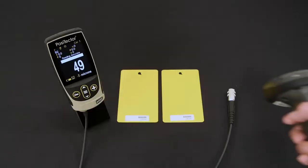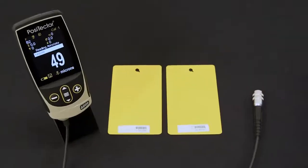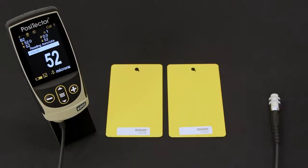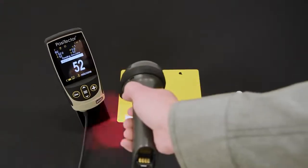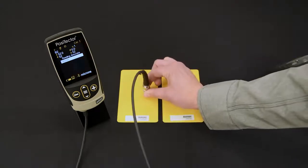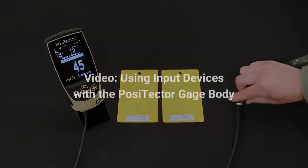Input devices such as barcode scanners and Bluetooth keyboards can be paired with the PosiTector 6000, allowing for easy batch and reading annotations. Include important information such as part numbers and notes in reports to streamline workflows. Watch the Using Input Devices with the PosiTector Gauge Body video to learn more.